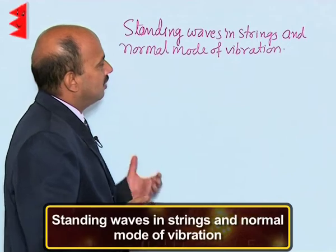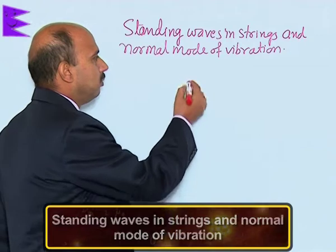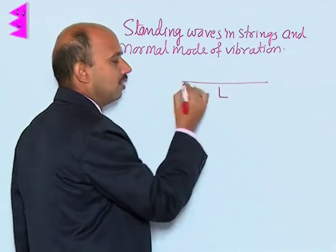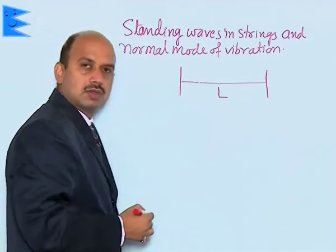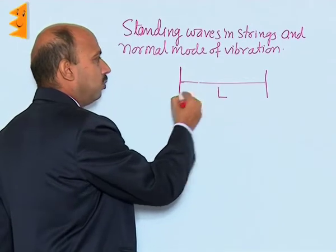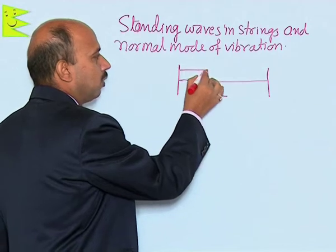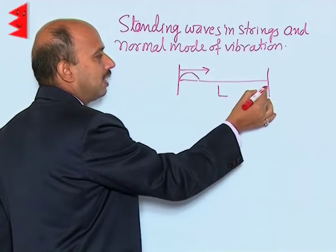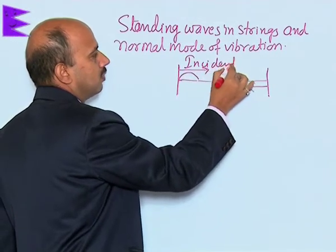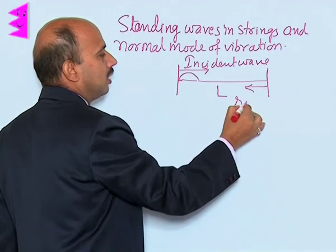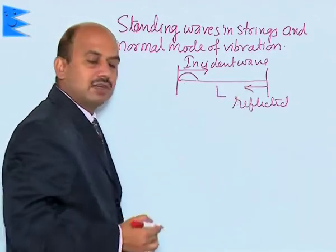Now, let us see standing waves in strings and normal modes of vibration. Suppose you have a string of length L and its two ends are fixed — these two ends are the fixed points at the rigid support. The incident wave goes from one side and is reflected from the other side. So one is taken as the incident wave and the other as the reflected wave.